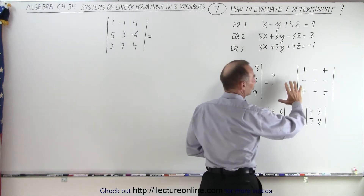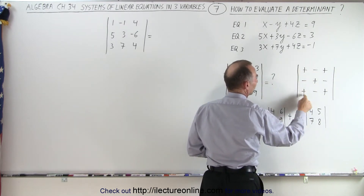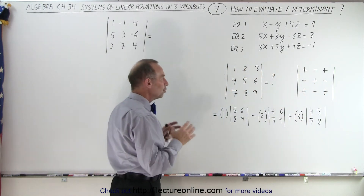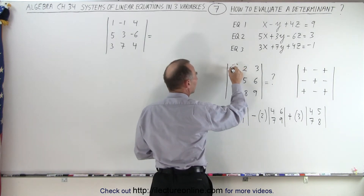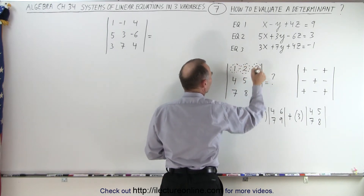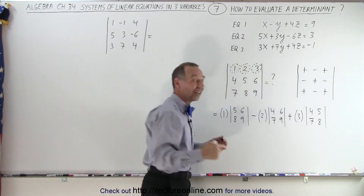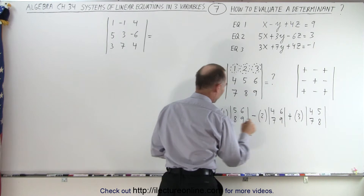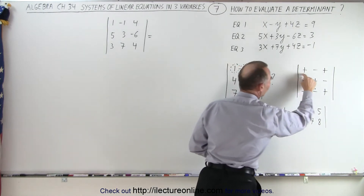We need to realize that there are signs associated with each of these numbers: plus, minus, plus, minus, plus, minus, plus, minus, plus. When evaluating the determinant, we alternately take each of the three numbers at the top — 1, 2, and 3 — with signs plus, minus, and plus respectively.